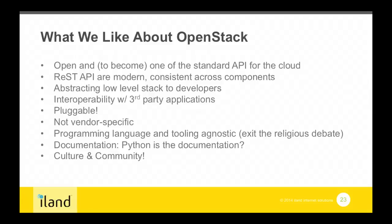Another thing we're looking for is interoperability with third-party applications. For example, if you want to do QA testing using continuous integration systems such as Jenkins or Bamboo, and you're using AWS, you can download the plugin, configure a couple parameters, click a button, and deploy to AWS. Rackspace and OpenStack will be the same. But if you do vCloud, you have a problem - you have to program the plugin and take care of it yourself. With OpenStack, there's no more religious debate around Java. You just use the REST API and you're good to go - you can choose Go or whatever language you want.